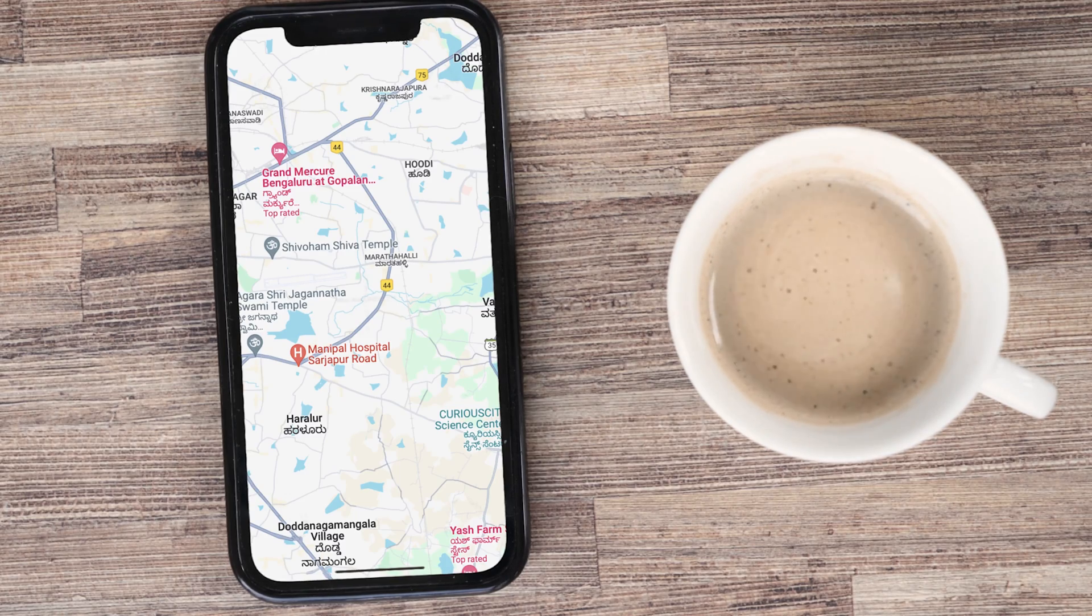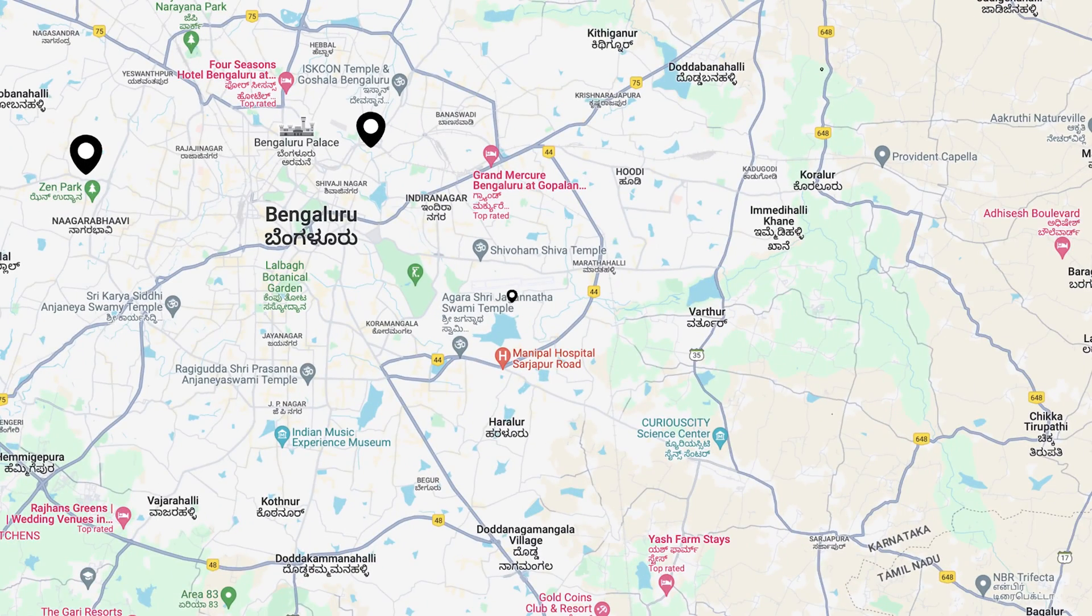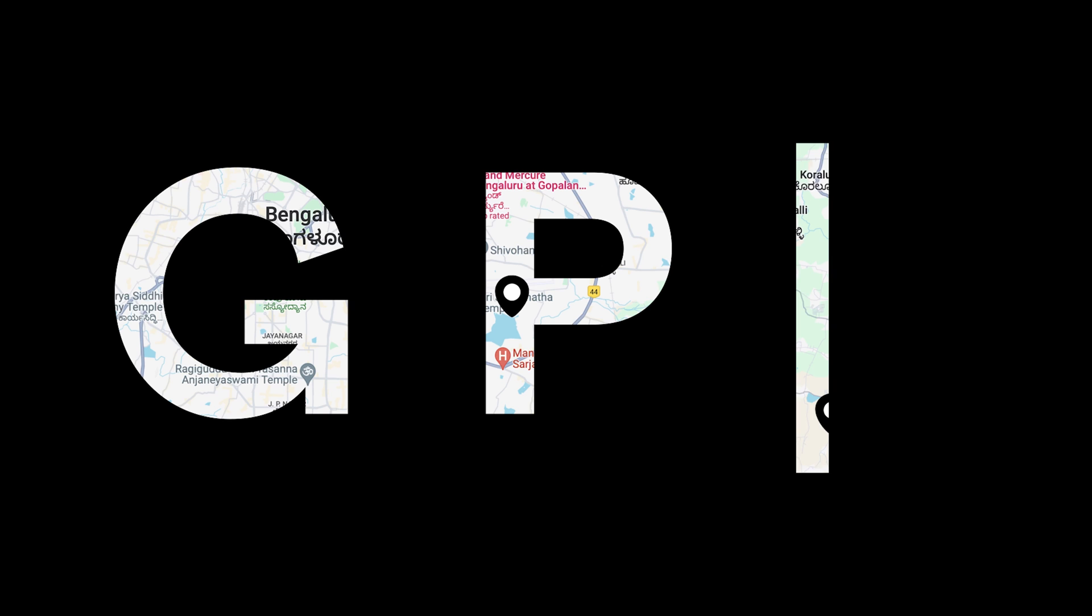Your phone can pinpoint your exact location thanks to the Global Positioning System or GPS. But how does this technology work? Behind the scenes is some simple math. Let's dive right into it.